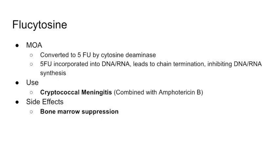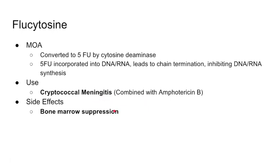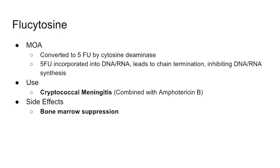Flucytosine is another drug saved for more systemic fungal infections. It is converted to 5-FU (5-fluorouracil) by cytosine deaminase in the fungal cell. Once converted, it works as a chain terminator to inhibit DNA and RNA synthesis. 5-fluorouracil is a chemotherapy drug, so now you just need to remember that flucytosine is essentially 5-FU for fungal infections. It is specifically used for cryptococcal meningitis with amphotericin. Because it is a chain terminator, side effects include bone marrow suppression — anemia, thrombocytopenia, and leukopenia.